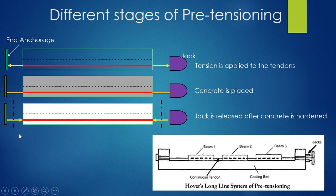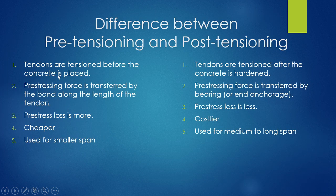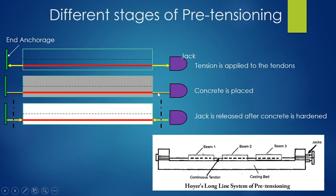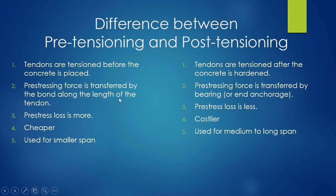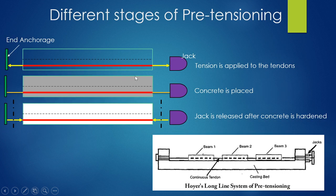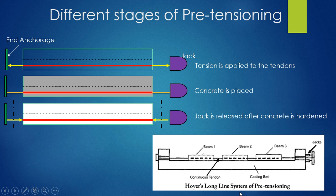In pre-tensioning stages: first, only the tendons are present with jacks and end anchorage, and tension is applied. Then concrete is placed. After the concrete has gained enough strength, the tendons are cut or the jack is released, inducing compressive force. The force is transferred to the concrete by bond between concrete and steel. This bond-based transfer is not the case in post-tensioning. This is called Hoyer's long-line system for pre-tensioning, where different spans and beams are set up together.